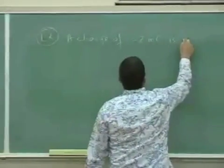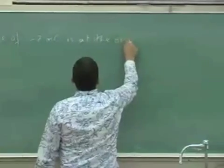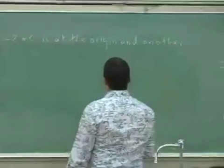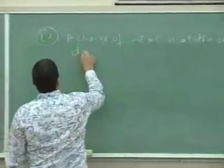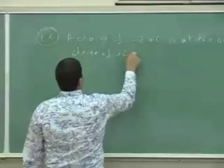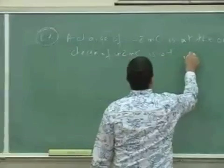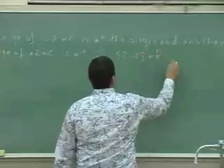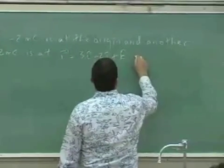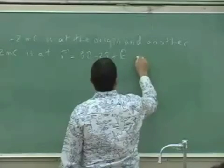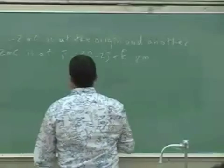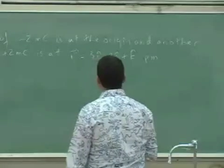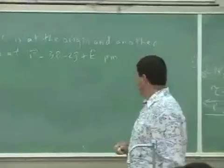2 millicoulombs is at the origin, and another charge of positive 2 millicoulombs is at r equal 3i-hat, negative 2j-hat, plus k-hat micrometers.